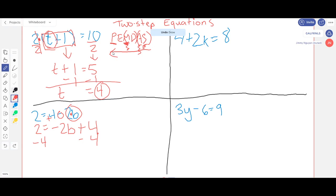Whoops, let me fix that. 2 minus 4 is negative 2 and over here 4 minus 4 is just 0, so bring this down.